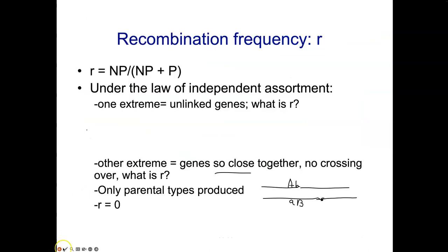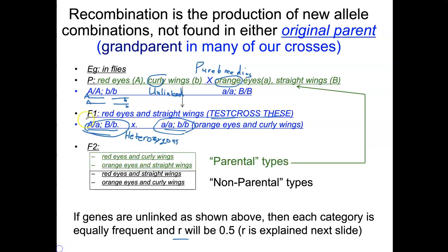We use a test cross because the homozygous recessive individual can only provide recessive alleles. Whatever allele is passed on by the dihybrid parent dictates what the phenotype looks like. If it inherits the dominant allele it will have red eyes; if it inherits the recessive allele it will have orange eyes. The same applies for the B gene — dominant gives straight wings, recessive gives curly wings.